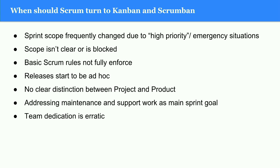The scope isn't clear or is blocked — the whole point is to have a sprint backlog a couple of weeks ahead. Without that, there's no scope. As a Scrum master, you need to know what you're going to be doing next, one or two steps ahead. If you don't have that visibility, Scrum might not be the right way to go. Basic Scrum rules aren't enforced, lack of communication, lack of retrospectives — live and learn. The team should improve together, and Scrum ceremonies are a major part of that.